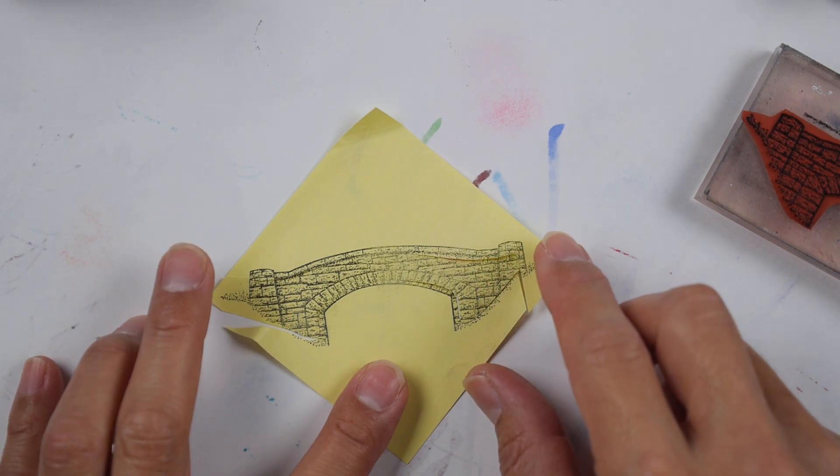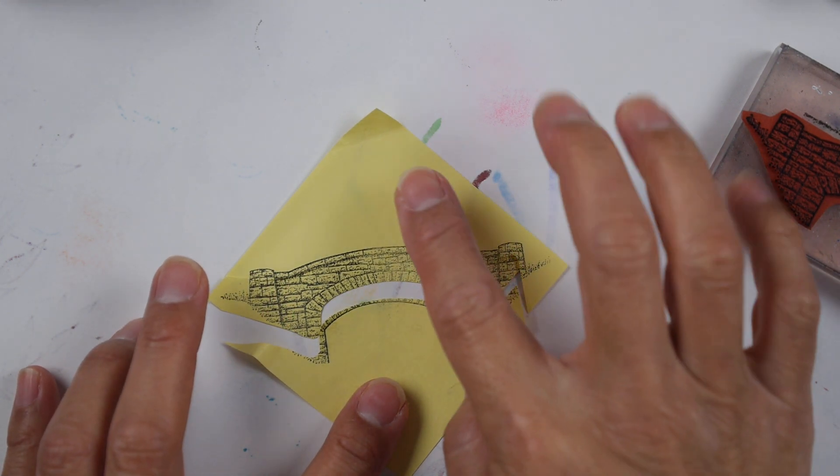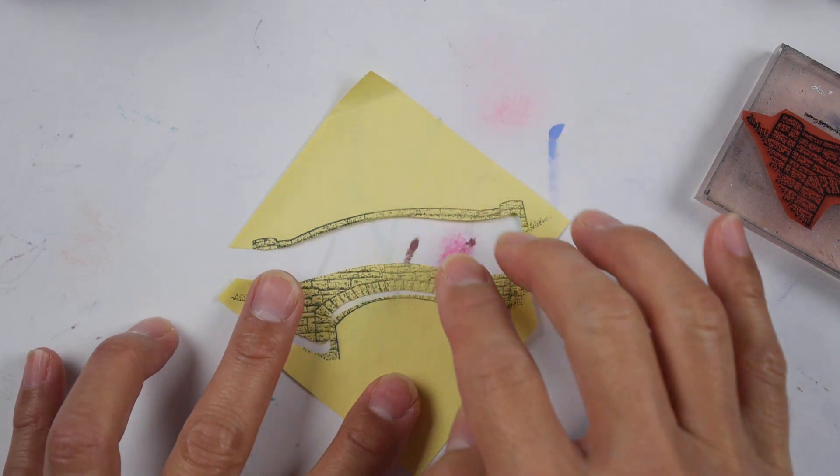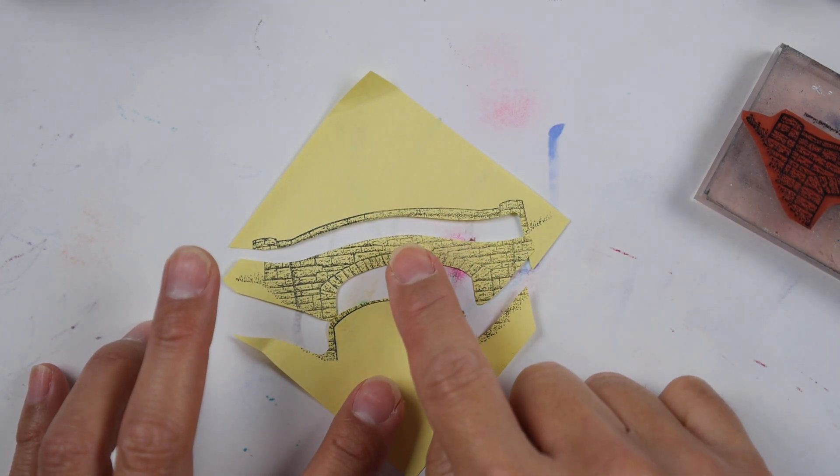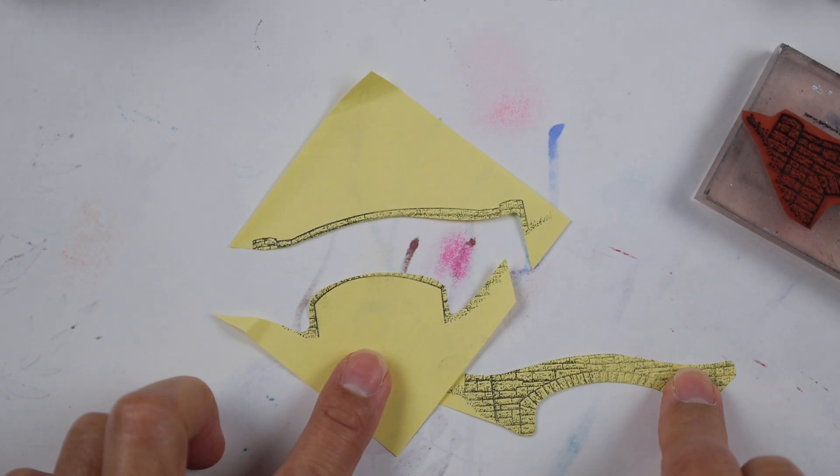But you can see right here just how undercut this is. See that right there. Here's that part. Here's that part. So it's just kind of a more narrow version of this mask.